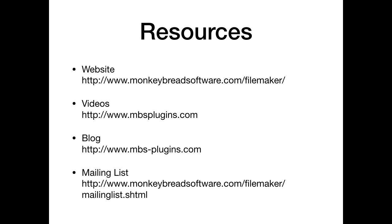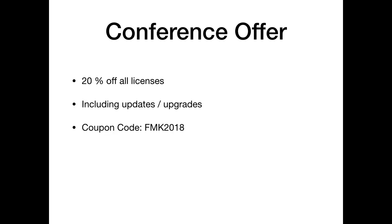We have a website you can visit to watch videos and read new stuff on the blog. There is a mailing list for announcements and discussions. For the conference we have a 20% discount on all licenses — the coupon code is FMK2018, that's FileMaker conference in German. So if you need a license, you can use that coupon code.